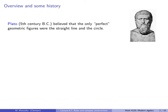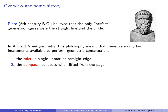Plato said that everybody knows what a perfectly straight line or a perfect circle looks like, but nobody has ever seen one. At least that was true back in the day — now with modern technology, I think a lot of people have seen perfectly straight lines or perfect circles. In ancient Greek geometry, this philosophy meant that there were only two instruments available to perform geometric constructions.